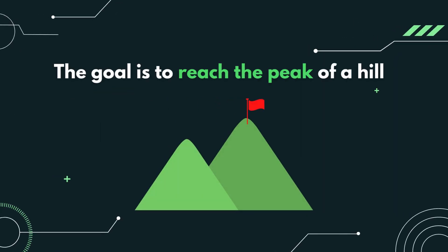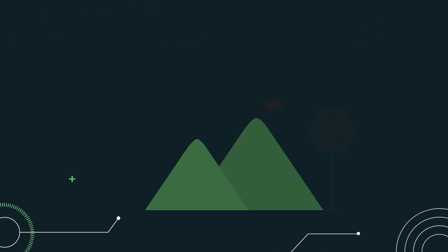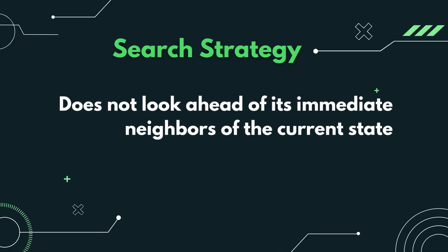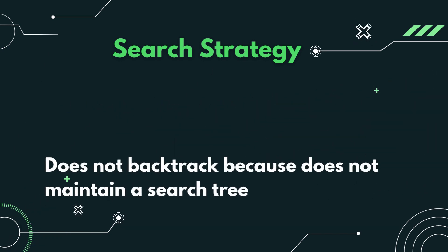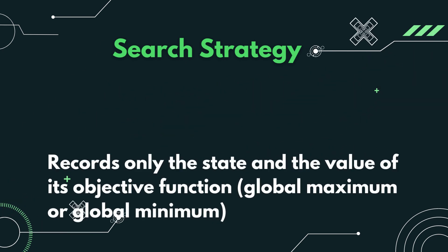The goal is to reach the peak of a hill where it will then terminate. The search strategy of a hill-climbing search is that it does not look ahead of its immediate neighbours of the current state. It does not backtrack because it does not maintain a search tree. It chooses randomly among the set of best successors if there is more than one, and it records only the state and the value of its objective function, which can either be a global maximum or a global minimum.